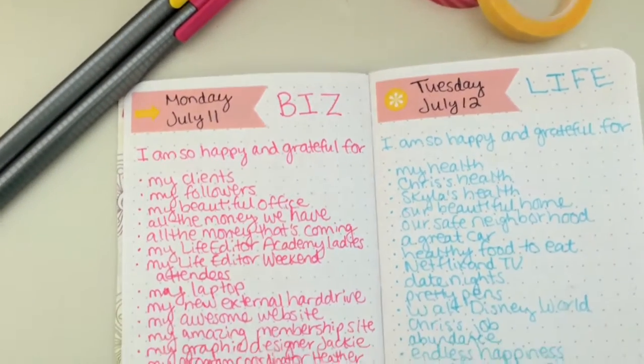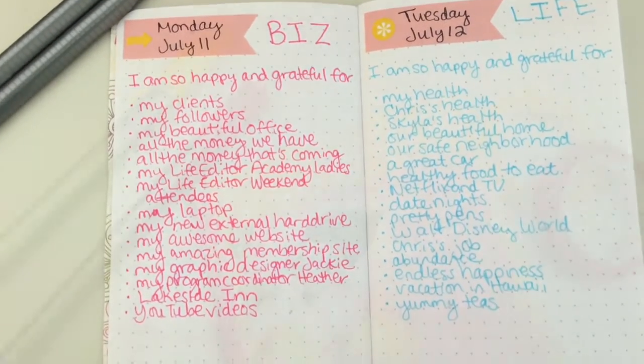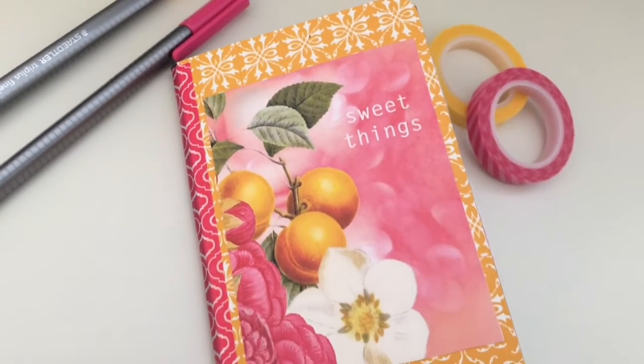And here's an example of a spread. I wrote down the things that I'm grateful for in my business and the things I'm grateful for in my life.